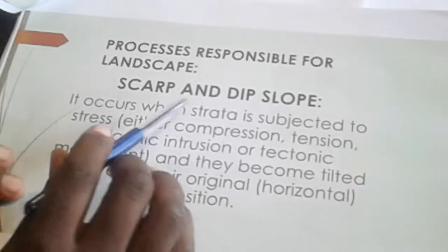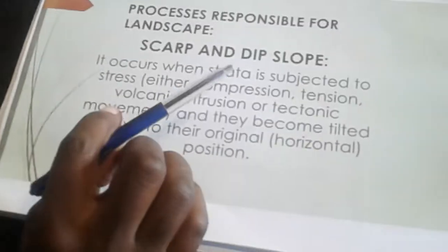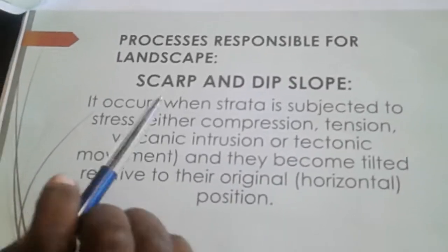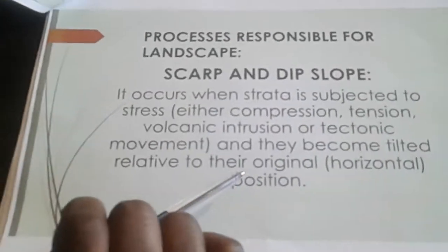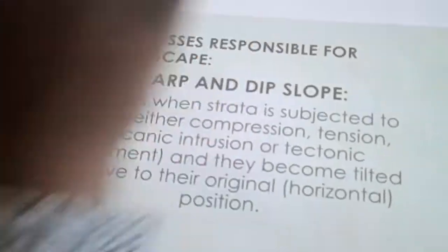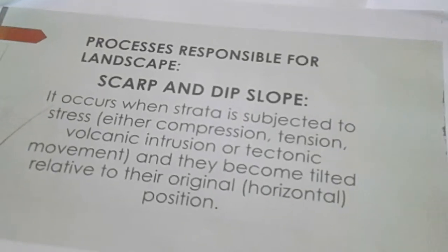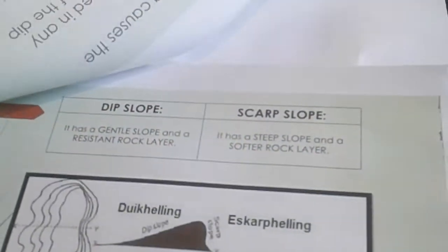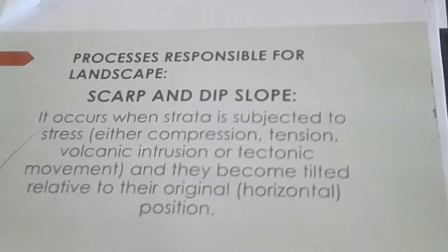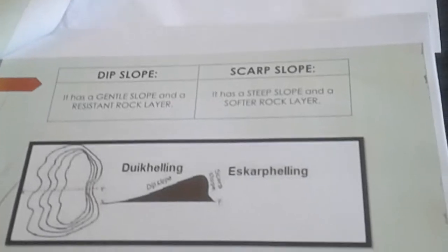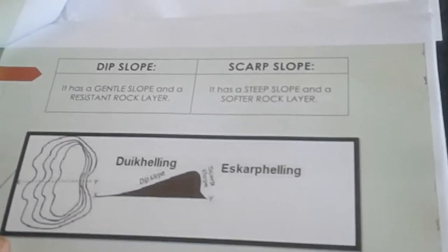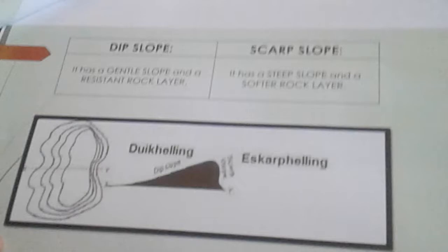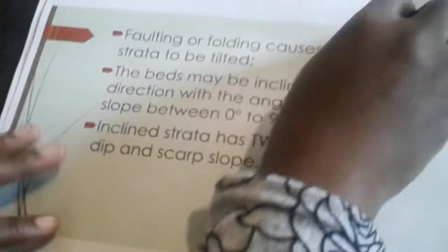Now, what are the processes responsible for the formation of these landscapes? As I already highlighted, it is mainly as a result of folding and faulting that takes place when we have compression and tension within the earth's crust, causing anticlines and synclines to form, which creates these inclined strata landforms.